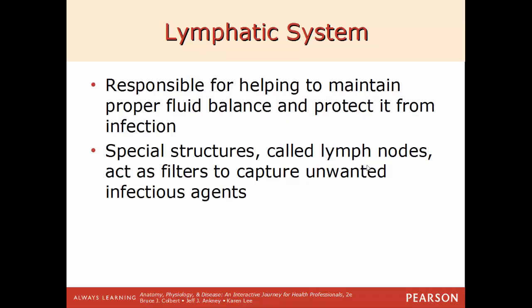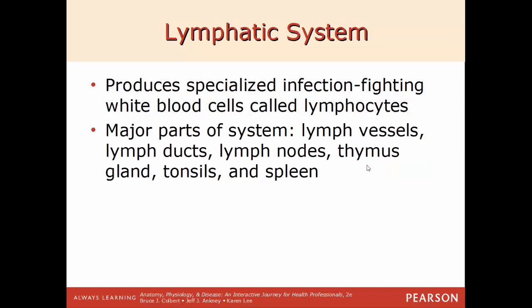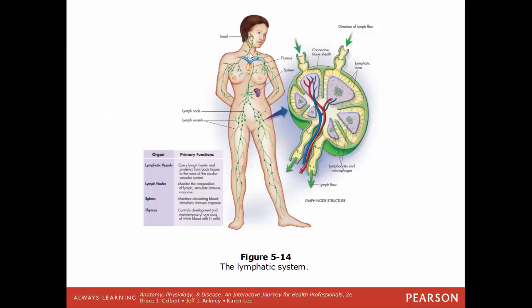The lymphatic system is responsible for maintaining proper fluid balance and protecting the body from infection. Special structures called lymph nodes act as filters to collect and capture unwanted infectious agents like viruses and bacteria. This system also produces infection-fighting white blood cells called lymphocytes. Major parts include lymph vessels, lymph ducts, lymph nodes, the thymus, the tonsils, and the spleen. Lymph nodes scattered throughout the body look like grapes in the diagram, and a close-up would show the inside of one lymph node.